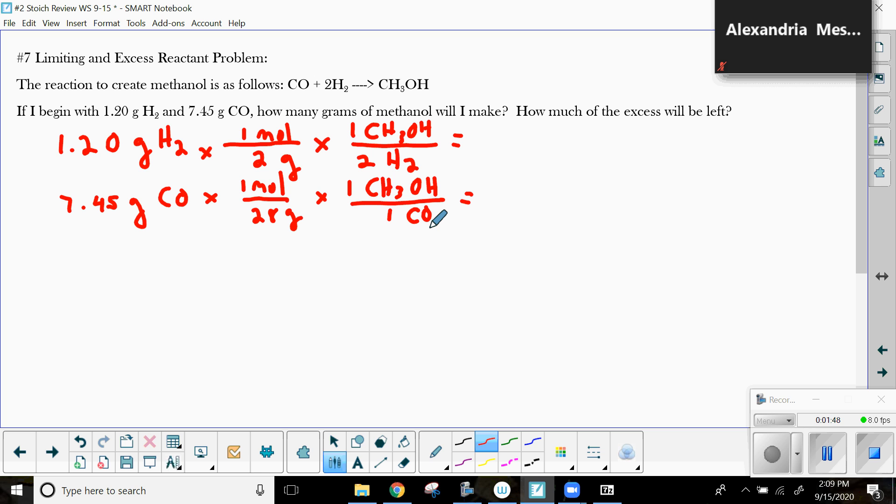And I find out that I will have 0.30 moles of the methanol. And I'm going to have here 0.26 moles of the methanol made with the carbon monoxide. So my limiting reactant, in this case, is carbon monoxide, because it will limit the amount of methanol I can make.